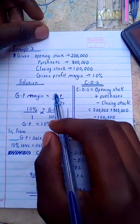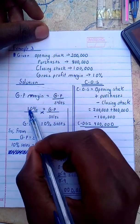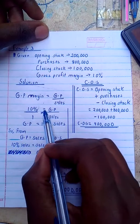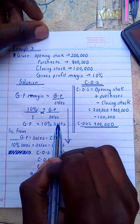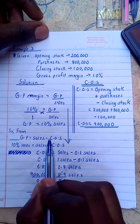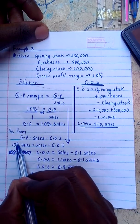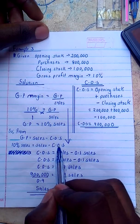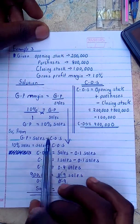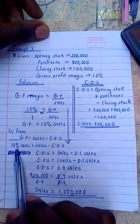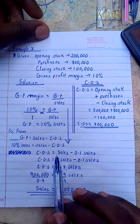From there, I determine gross profit using the margin formula: gross profit margin equals gross profit divided by sales. Since margin is concerned with sales, 10% equals gross profit over sales. Cross-multiplying gives gross profit equal to 10% of sales. From the formula, gross profit equals sales minus cost of sales, so 10% of sales equals sales minus cost of sales. Rearranging: cost of sales equals sales minus 10% of sales, converting the percentage: cost of sales equals sales minus 0.1 of sales.